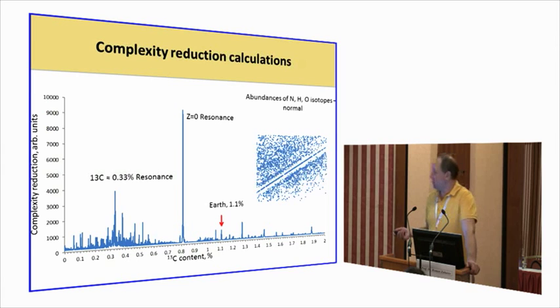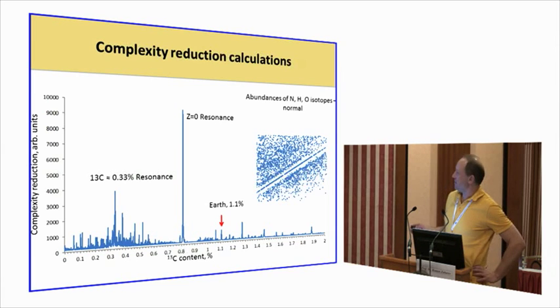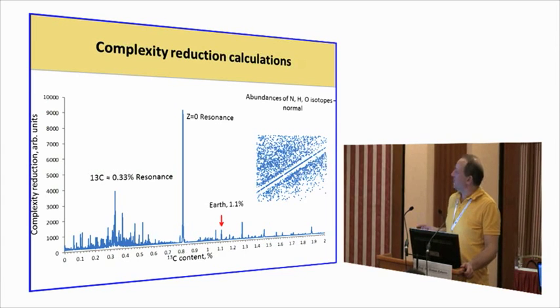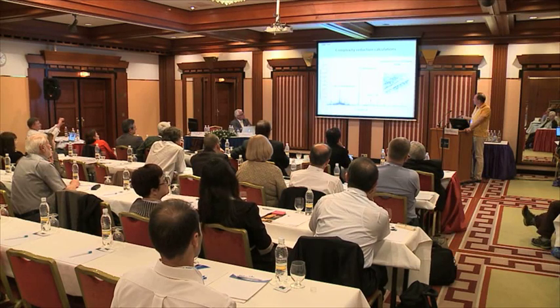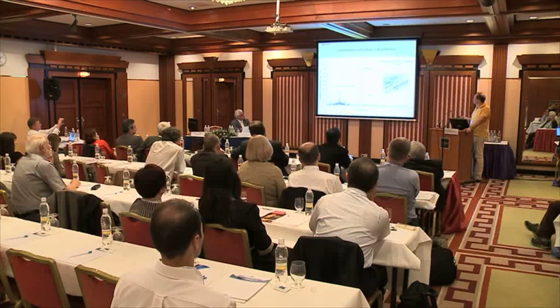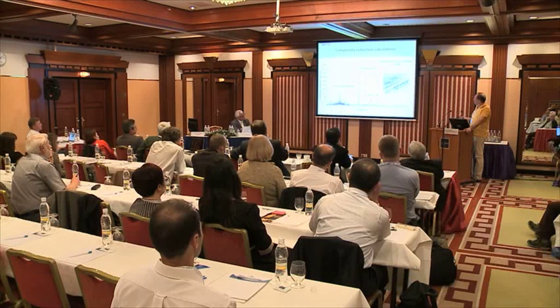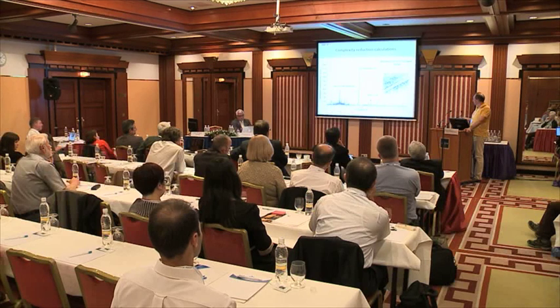If you do this scan using C13 content, that's what you see. First of all, there are many resonances, but they have different abundance. So the Z equal to zero resonance is the strongest. And we actually off this resonance for C13, we're off quite a bit, about 25%, 30%. There is also a resonance corresponding to 0.33% of C13, that's depletion. And there is also resonance corresponding to the current average composition. So there's a small resonance here.